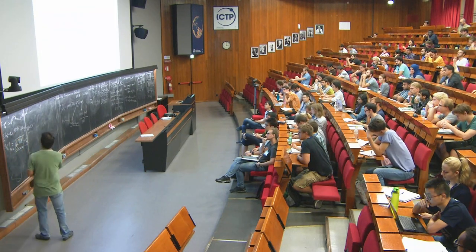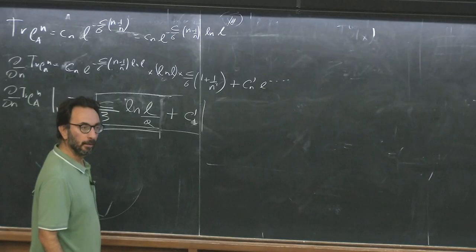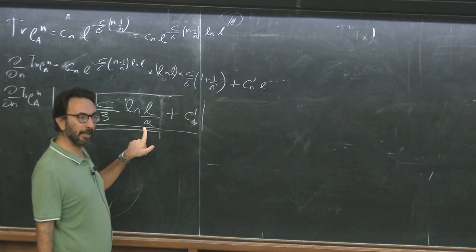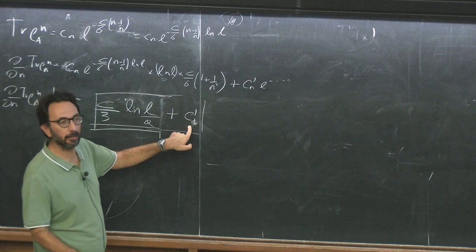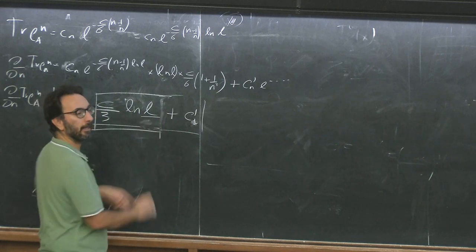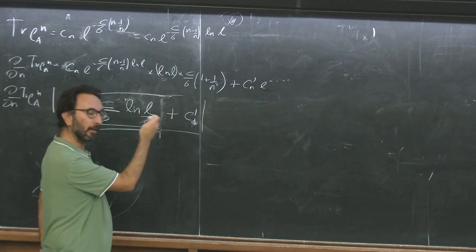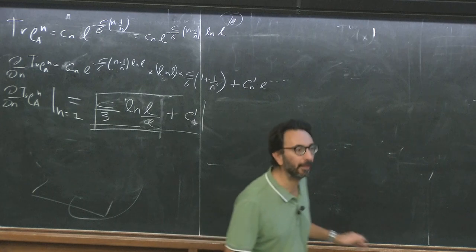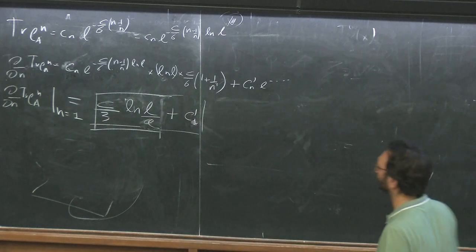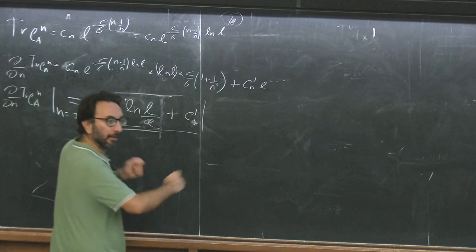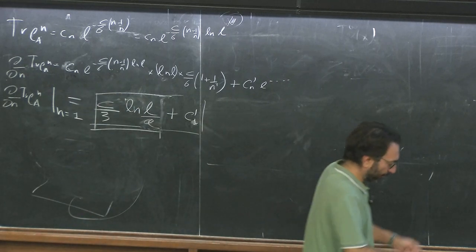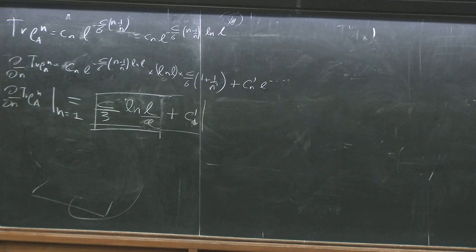In the end you can write the final formula where if you write it this way, c₁′ is a dimensionless number. The UV cutoff obviously gives a scale to length because distances are not measured in meters or fermis in a field theory — there is a scale given by the UV cutoff. Very good question.